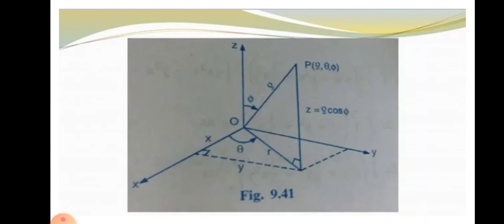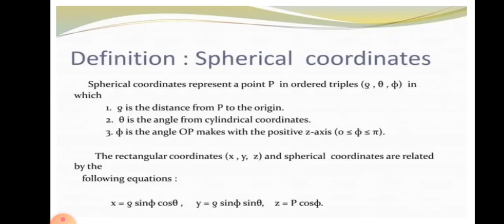This is the illustration, usually shown between X, Y, and Z with the particular coordinates. Next is the definition of spherical coordinates. A point P is represented by the coordinate triple (ρ, θ, φ), where ρ is the distance from P to the origin, θ is the angle from the cylindrical coordinates, and φ is the angle OP makes with the positive Z axis in the interval 0 to π.